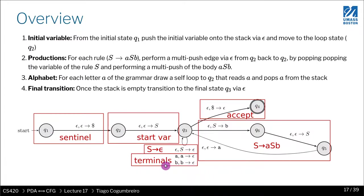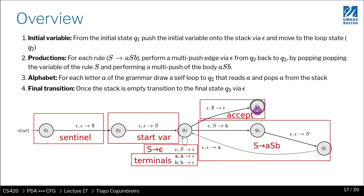Most of the PDA structure is fixed for all grammars: Q1 to Q2 always pushes dollar sign; Q2 to Q3 always pushes the start variable; Q3 always has the self-loop reading all terminals; and Q3 to Q4 always pops dollar sign and accepts. The only grammar-specific part is generating the edges that represent the grammar rules.